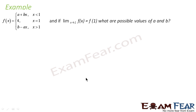In this example, we have to find the value of a and b where the function is given: f is equal to a plus b for x less than 1, is equal to 4 for x equal to 1, and b minus ax for x greater than 1. Also, we are told that the limit of x tends to 1 of f(x) is equal to f(1).